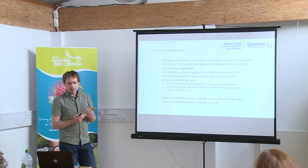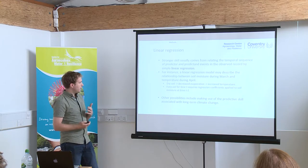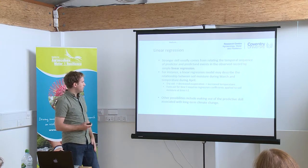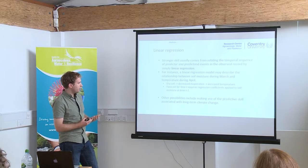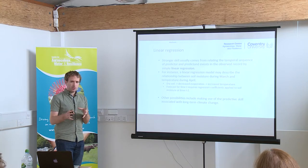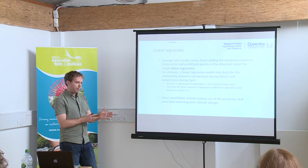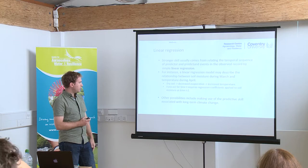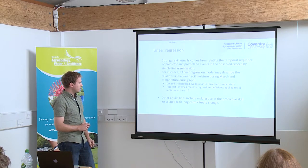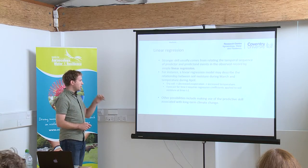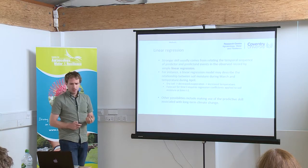Stronger skill usually comes from relating the temporal sequence of predictor and predictand events in the observed record by simple linear regression. We may use a linear regression model to describe a relationship between soil moisture content during March — typically one month before — and temperature during April, with the idea that dry soil leads to decreased evaporation and increased temperature. There are plenty of other opportunities for making use of predictive skill in a linear regression model.